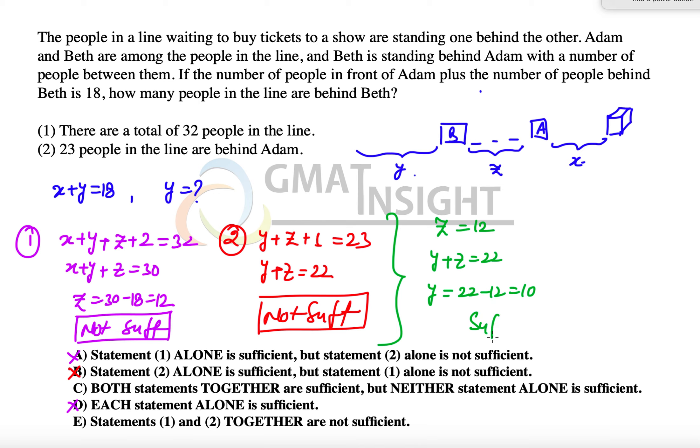A unique value, which means the statements together are sufficient. And the final answer to the question is option C.